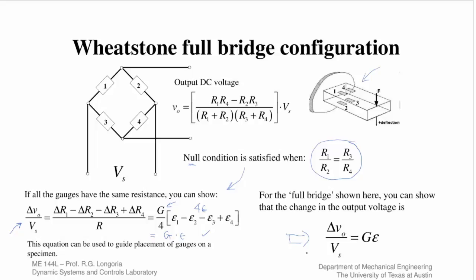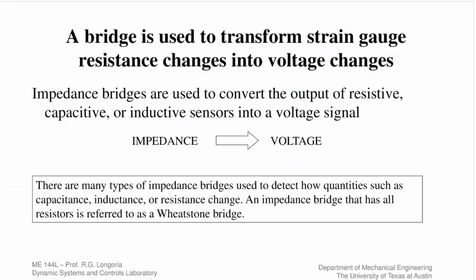This slide really brings home the point that strain gauges, when they change, the strain is imposed and you get a resistance change. When you put them in a bridge, the bridge is used to transform those resistance changes into voltage changes. The general concept is any kind of bridge, you can use the general term of impedance to mean resistance, capacitance, or inductance. Any sensor that relies on any of these electrical quantities, when you put it in an impedance bridge, it allows you to then convert what you want to measure into a voltage, which is something we can more effectively measure using a data acquisition system. That's the whole reason for using a bridge, is that we transform an impedance change into a voltage change.